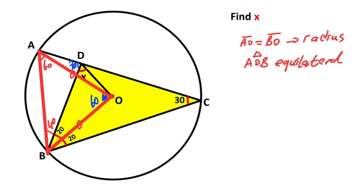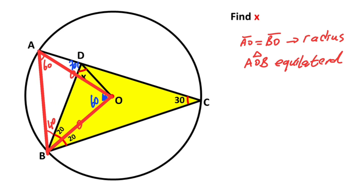Now focus on triangle ABD. In a triangle, the sum of interior angles equals 180 degrees. If one angle is 40 degrees and another is 70 degrees, that means 70 degrees is left here. Therefore triangle ABD is an isosceles triangle.